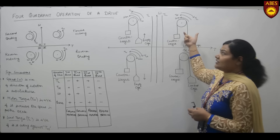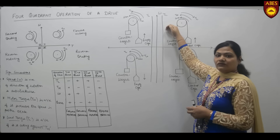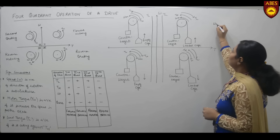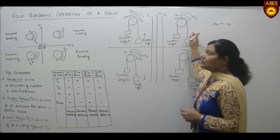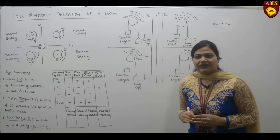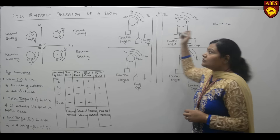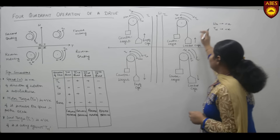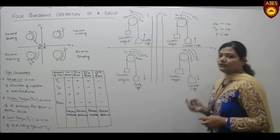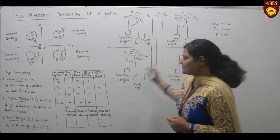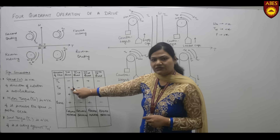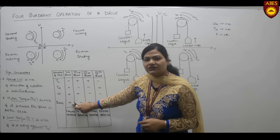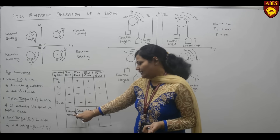In the first quadrant, the motor is hoisting up the loaded cage and must run in the anticlockwise direction, so omega m is positive. To lift the loaded cage, the motor torque must assist the speed of rotation, so Tm is also in the anticlockwise direction, making it positive. Power is positive. According to the table, Tl is negative, motor torque is positive, and speed is positive. Power, omega times Tm, is positive, and because rotation is anticlockwise, this is the forward motoring mode.